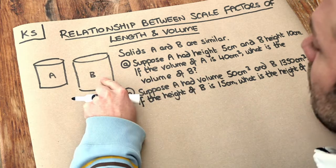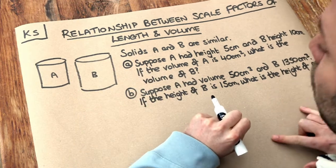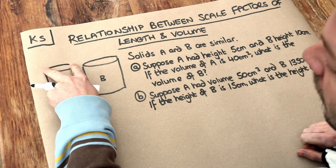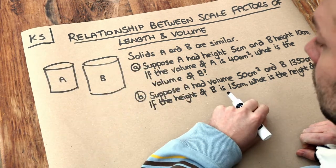And what it means for these solids to be similar is that everything is in the same proportion. So for example, if the height was to double from A to B, then the diameter would also double as well.